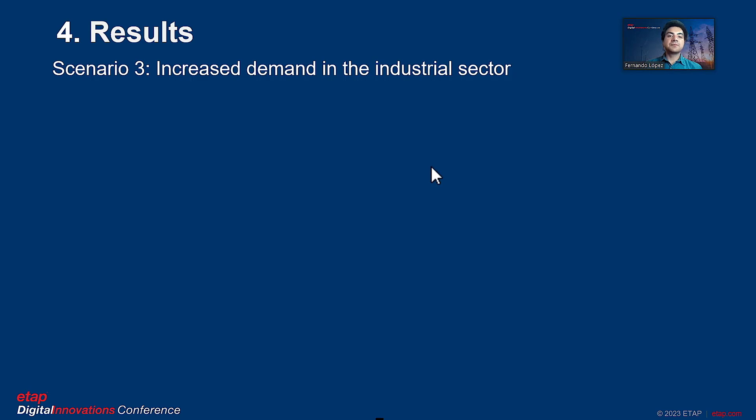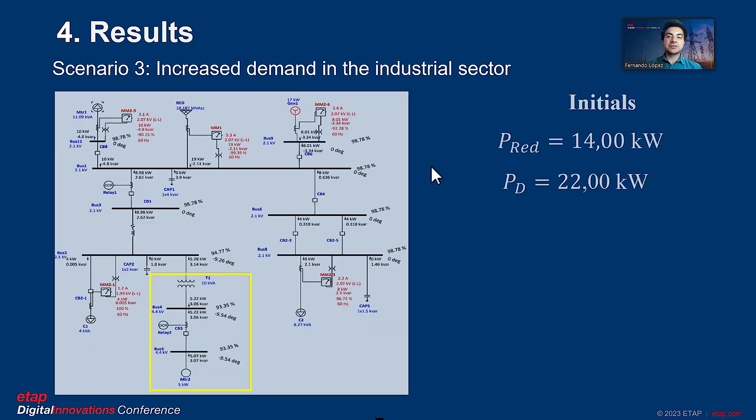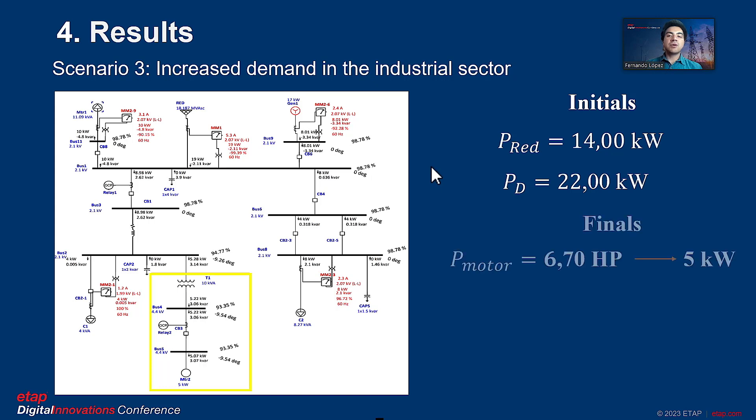Scenario 3: Demand increases in the industrial sector. After capturing the data in real-time, the incorporation of the MTR2 load is simulated with an active power of 5 kW, with an increase of 22.73% in demand, so that the power of the network is 19 kW.